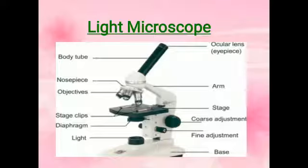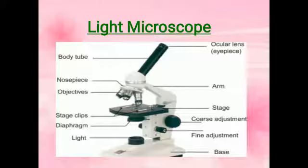Let's start with light microscope. The light microscope, also called optical microscope, is a type of microscope that commonly uses visible light and a system of lenses to generate magnified images of small objects. Light microscopes are the oldest designs of microscopes and were possibly invented in the 17th century.